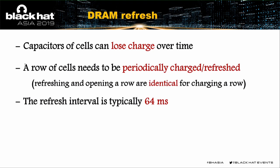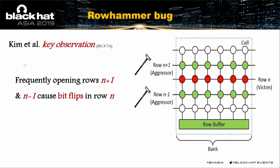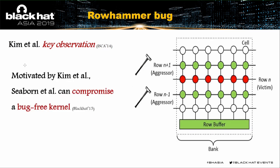Because capacitors lose charge gradually and need to be recharged periodically, in 2014 Kim reported a key observation: frequently opening rows N+1 and N-1 will cause bit-flips in row N. A bit-flip means that some cells in row N have been permanently flipped from bit-zero to bit-one or vice versa. Motivated by Kim's observation, Seaborn from Google was the first to compromise the bug-free kernel and gain kernel privilege by means of Rowhammer.